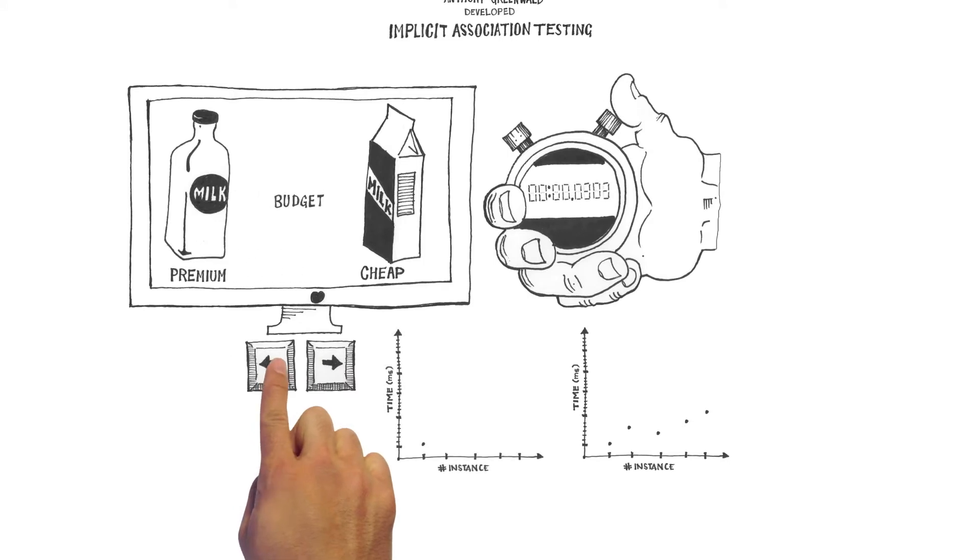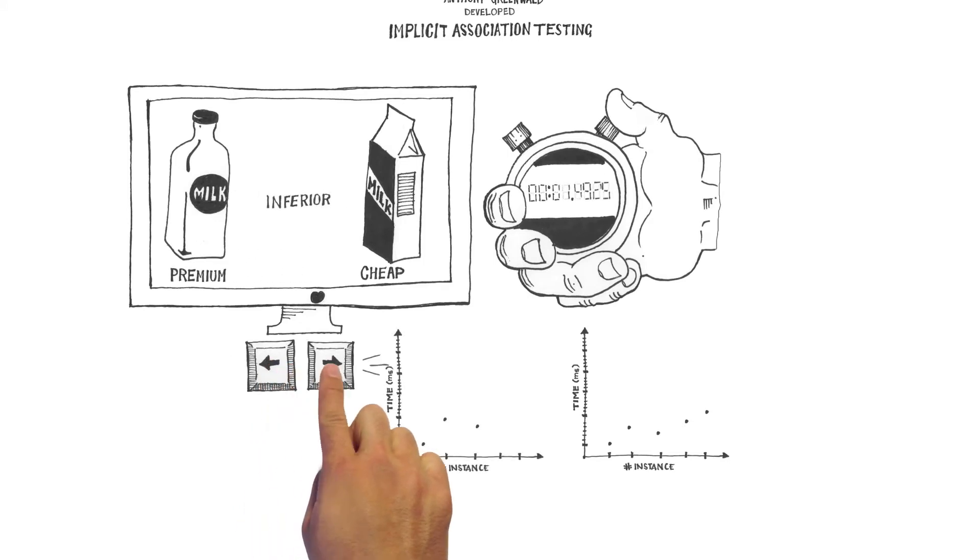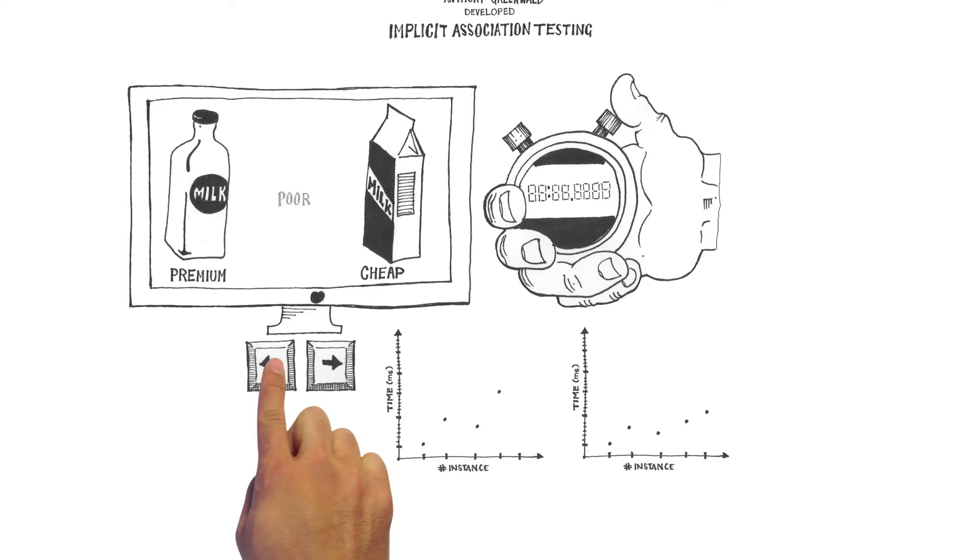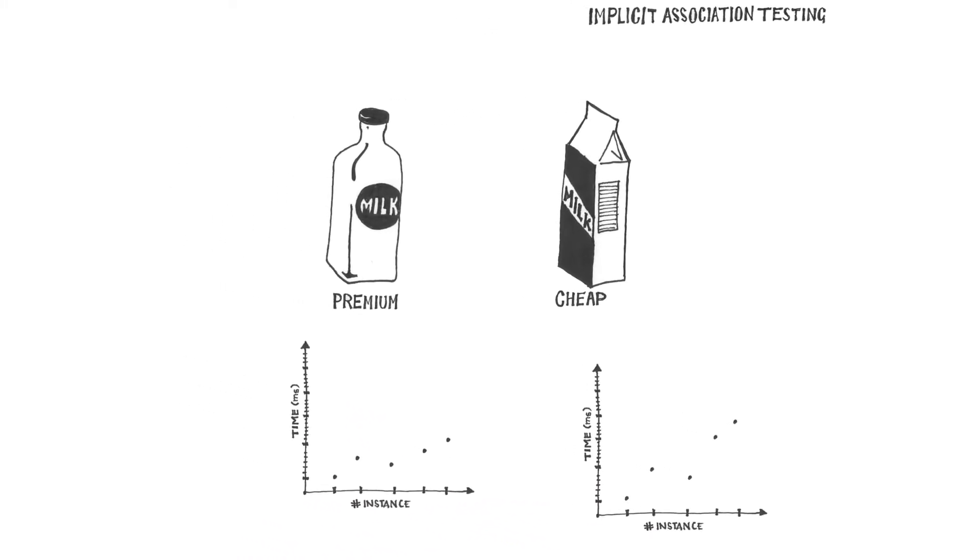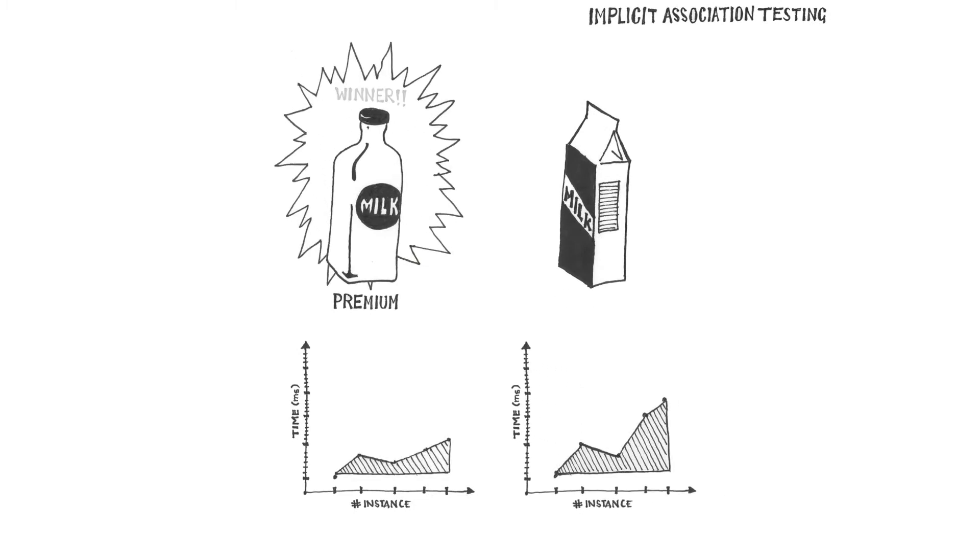If consumers respond more quickly and accurately when package A is paired with premium than when package B is, we can say package A conveys premium quality better than package B. And most importantly, we can say how much better.